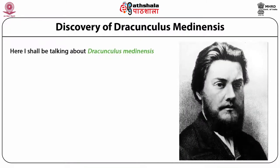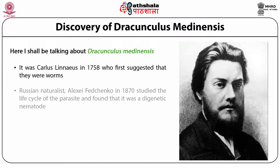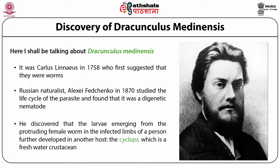Here I shall be talking about Dracunculus medinensis. It was Carl Linnaeus in 1758 who first suggested that they were worms. Russian naturalist Alexei Fedchenko in 1870 studied the life cycle of the parasite and found that it was a digenetic nematode. He discovered that the larvae emerging from the protruding female worm in the infected limbs of a person further developed in another host, the cyclops, which is a freshwater crustacean.